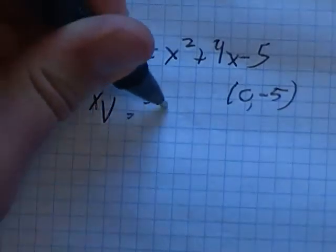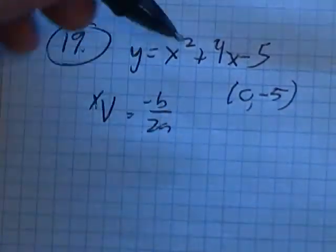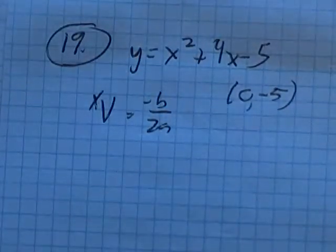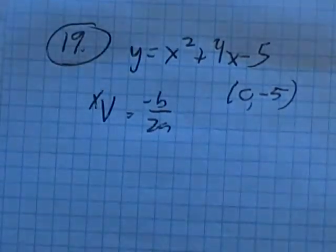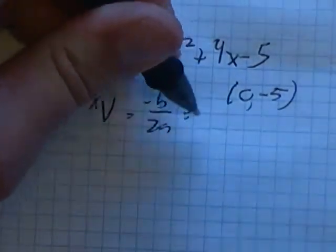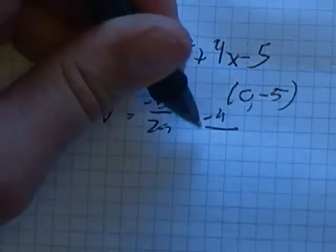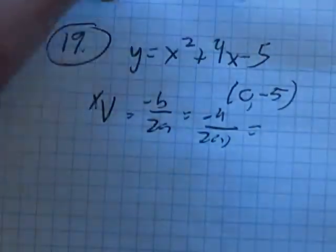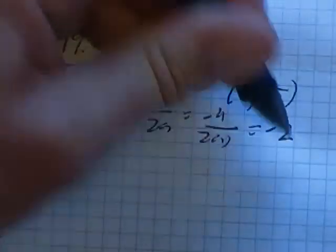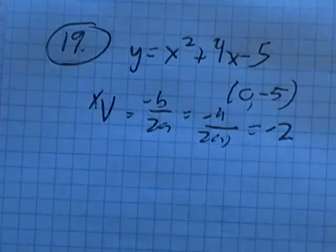The x part of the vertex is negative b over 2a. Quadratic formula without the plus or minus part, right, in the middle. So negative b would be negative 4, 2a is 2 times 1, negative 4 divided by 2. So the x part is negative 2.